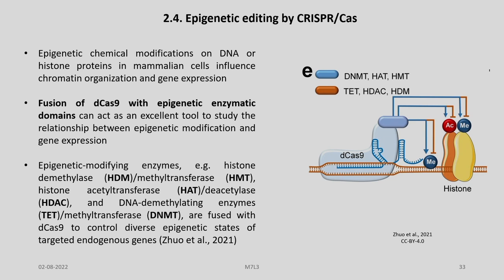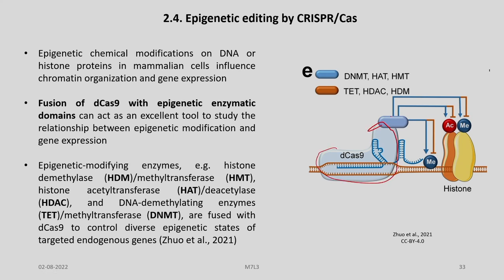Epigenetic modifying enzymes — for example, histone demethylase HDM or methyltransferases HMT, histone acetyltransferases HAT, deacetylase HDAC, and DNA demethylating enzymes TET and methyltransferases DNMT — are fused with D-Cas9 to control diverse epigenetic states of targeted endogenous genes. You can see here the various epigenetic modifying enzyme modules that are fused with D-Cas9.